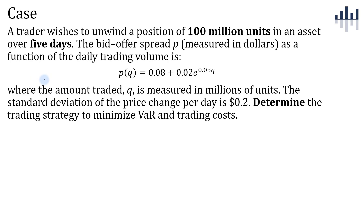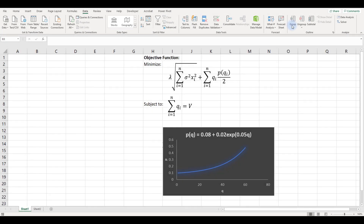Now let's try a case. A trader wishes to unwind a position of 100 million units in an asset over five days. The bid-offer spread function p, measured in dollars as a function of daily trading volume, is given as p = 0.08 + 0.02 × exp(0.05 × q), where q is the amount traded in millions of units. The standard deviation of the price change per day is 20 cents. We'll bring this to Excel to model and determine the trading strategy that minimizes VAR and trading costs.